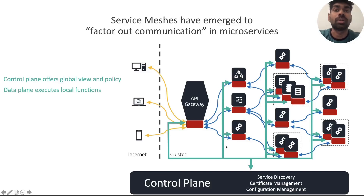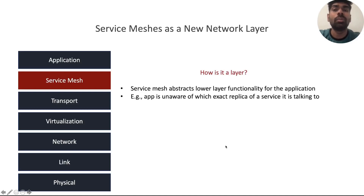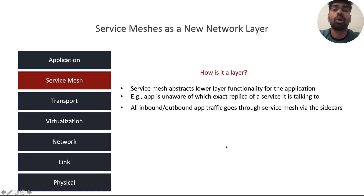Now with a better understanding of service meshes, let's move on to what implications these hold for networking research. Our paper first makes the argument that it's quite useful to think of service meshes as a new layer in the network stack which sits between the app and the transport. Fundamentally, there are two questions: one, how is it a layer? It's a layer because it abstracts the lower layer functionality from the application. For example, the app is unaware of which exact replica of a service it is talking to because the service mesh abstracts out that detail. Additionally, all inbound and outbound app traffic goes through the service mesh via the sidecar, which is consistent with how layering works.